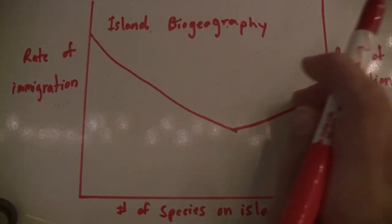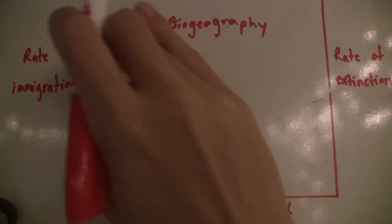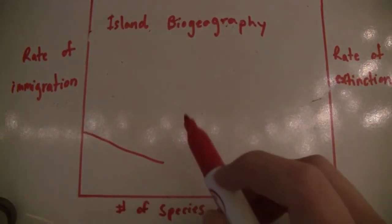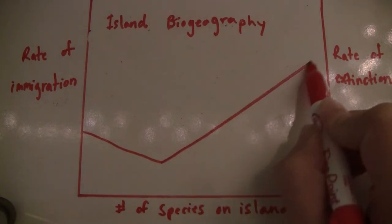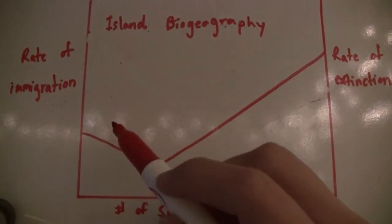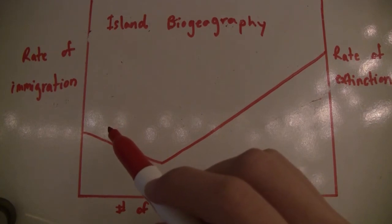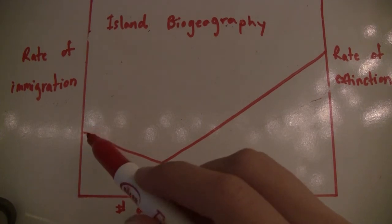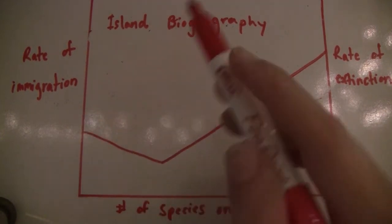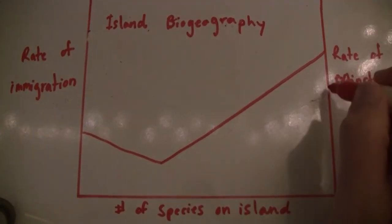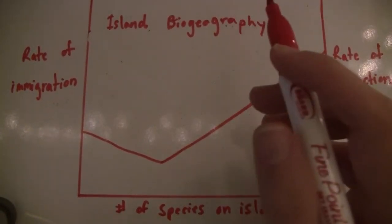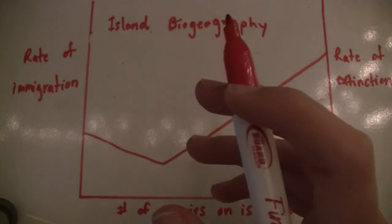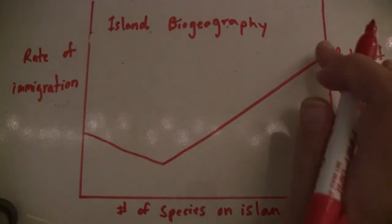Now we'll look at an example of an island far from the mainland that is also small. If the island is far from the mainland, the rate of immigration is pretty low. The small island's rate of extinction is high because the population is smaller on the small island, and it is far from the mainland, so it's not going to immigrate very often.